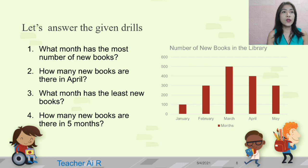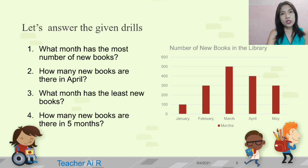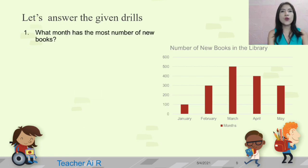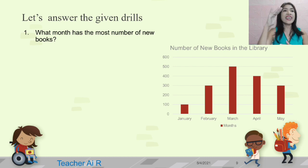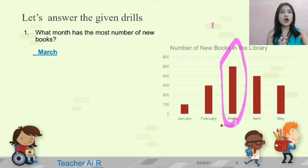Let's answer. For question one, what month has the most number of new books? We're going to look at the bar with the highest bar. The highest is 500, and it's on the month of March.